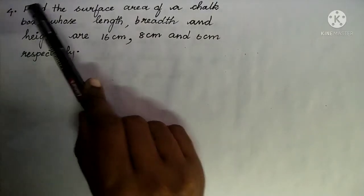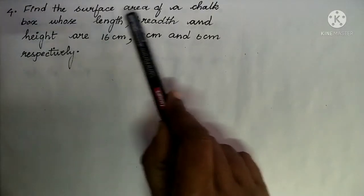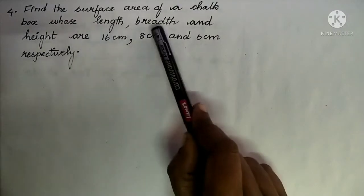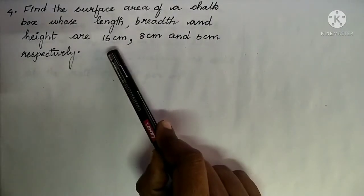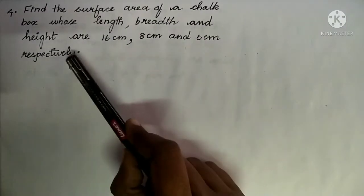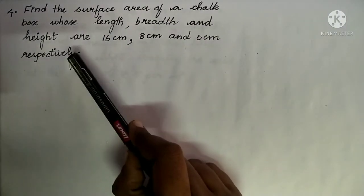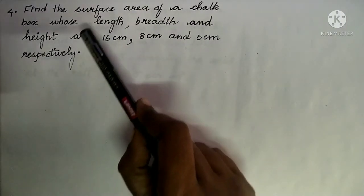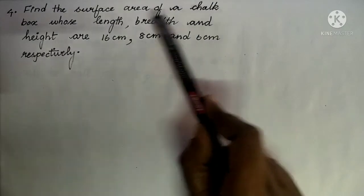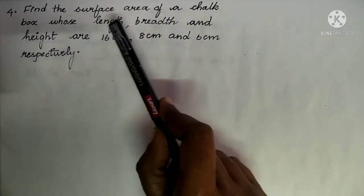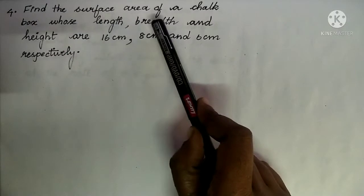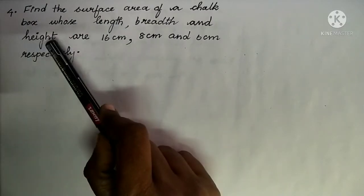Question 4. Find the surface area of a chalk box whose length, breadth, and height are 16 cm, 8 cm, and 6 cm respectively. In this question, we are going to find the surface area of a chalk box. The chalk box will be in the shape of a cuboid because length, breadth, and height are given.